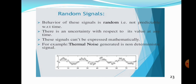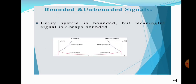What about random signal? Random signal is also known as stochastic signal. The behavior of random signals cannot be predicted with respect to time. There is uncertainty with respect to its value at any time. These signals cannot be expressed mathematically. So behavior of deterministic signal can be predicted and expressed mathematically; behavior of random or stochastic signal cannot be predicted and cannot be represented mathematically.